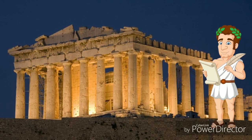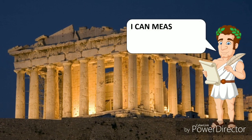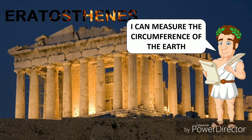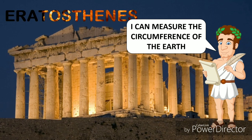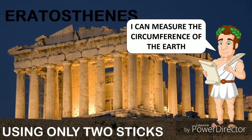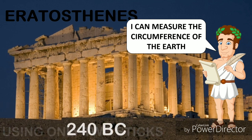But there was a Greek man who measured the circumference of the Earth in an era when there were no satellites and smartphones. That man was Eratosthenes, who was working as a librarian. He measured the circumference using only a couple of sticks and with the help of some basic mathematics in 240 BC.